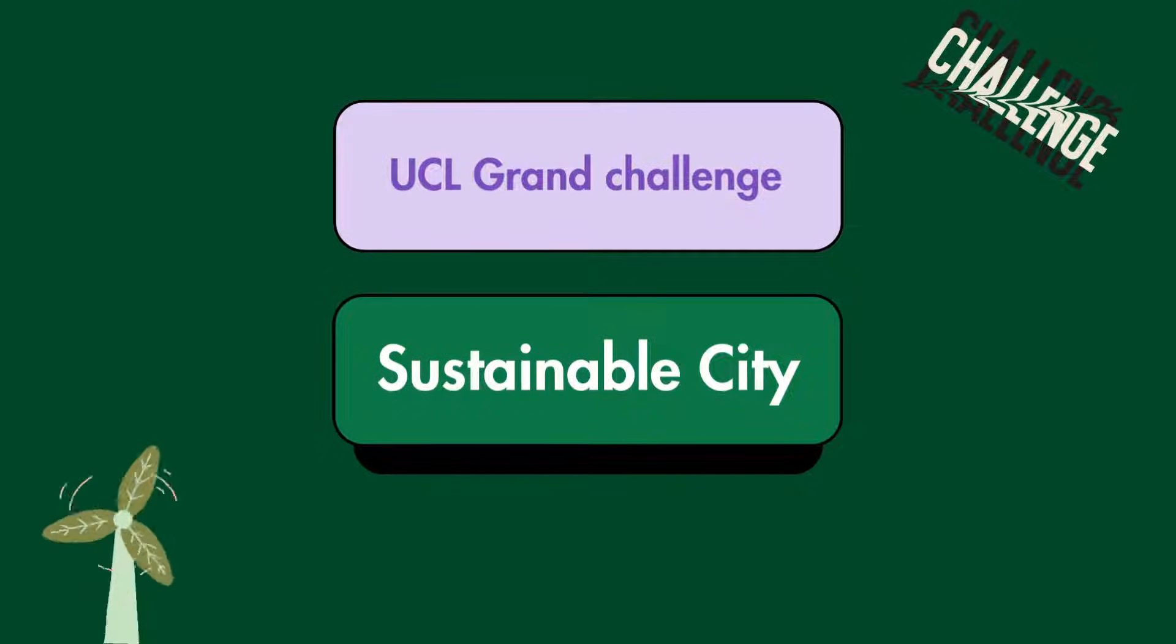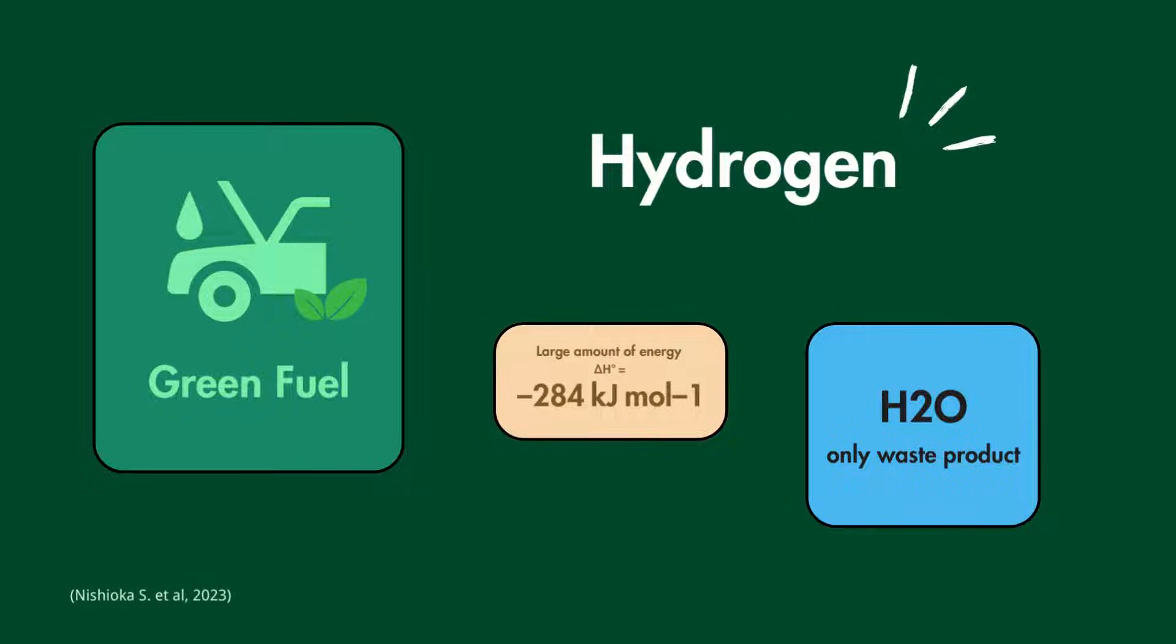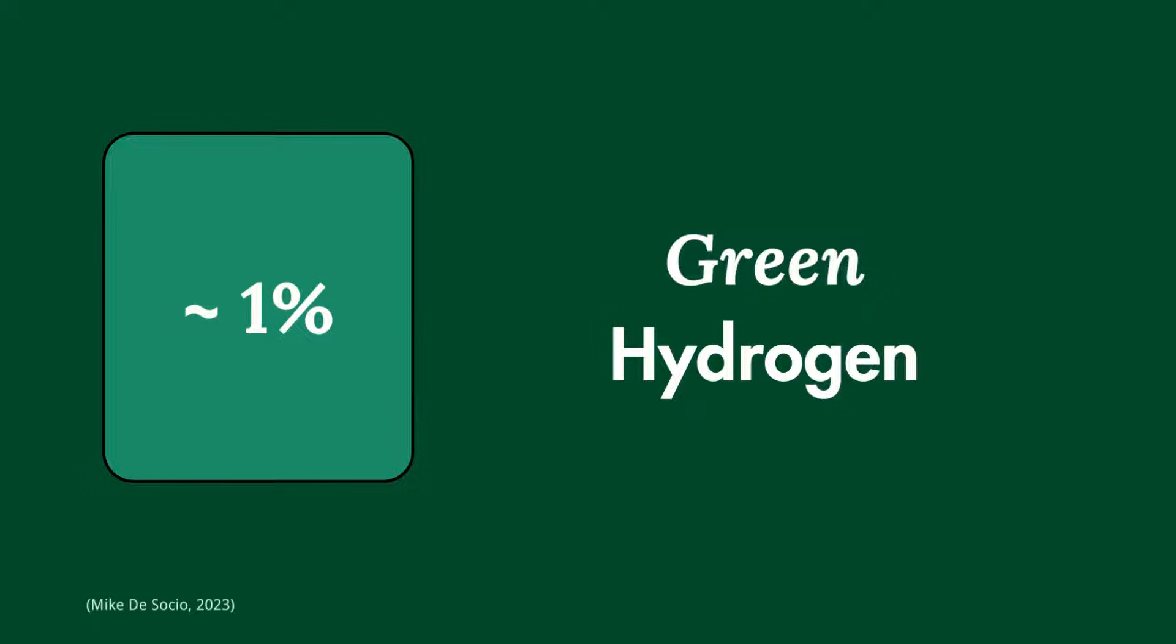To build a sustainable city, we need to power it with a green fuel that emits no pollution when consumed. Hydrogen is an ideal candidate. However, only 1% of hydrogen today is produced in a sustainable way.